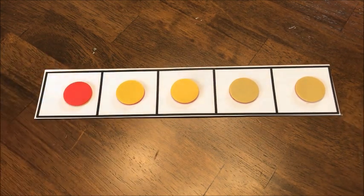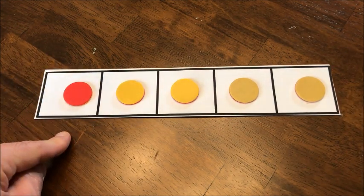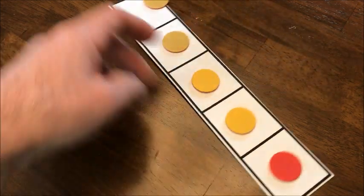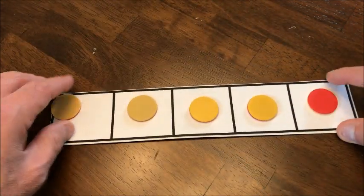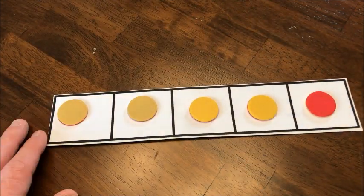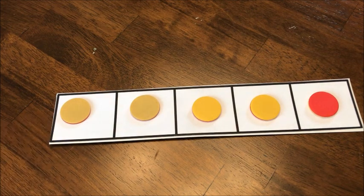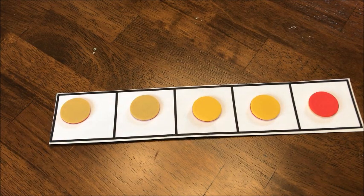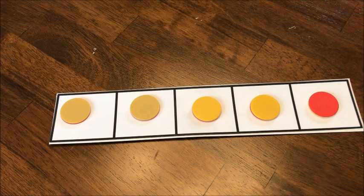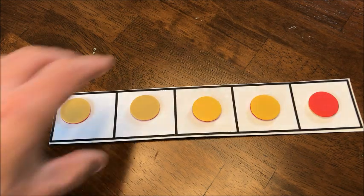Also, you can have them flip their cards. So, for example, we have one red and four yellow. You can have them flip it. And now we've also taught the commutative property of one and four and four and one is the same thing. Remember, this is a concrete exposure. If you think about the CRA we talked about earlier, this is an introduction to this in a very concrete way.